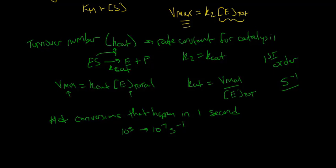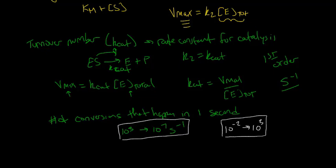To compare, if we think about industrial processes — chemical reactions that happen in industry — these turnover numbers tend to be in the range of 10⁻² up to about 10³. So you can see that enzymes are much, much better at making products than what we can do in the laboratory without enzymes. Biological systems are much more advanced than what we've figured out how to do so far.